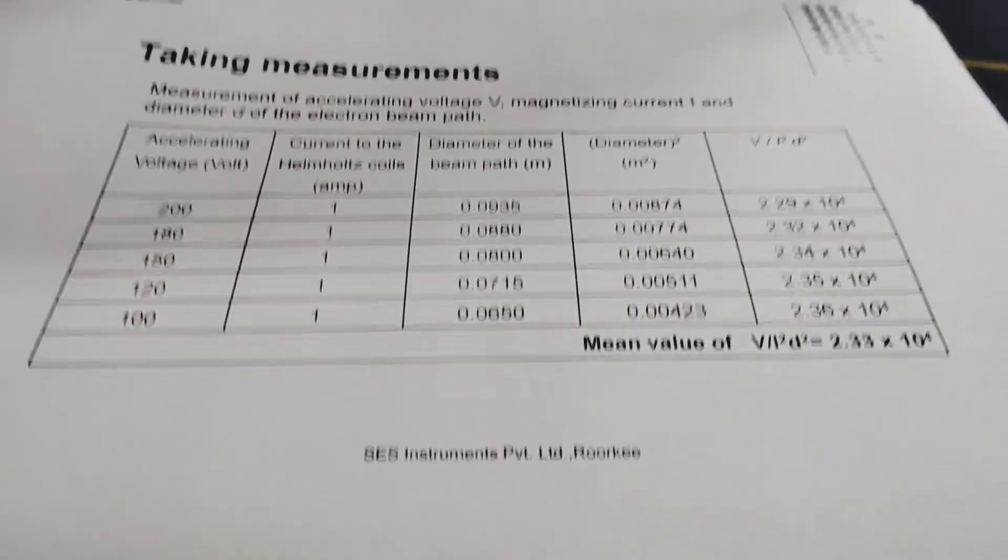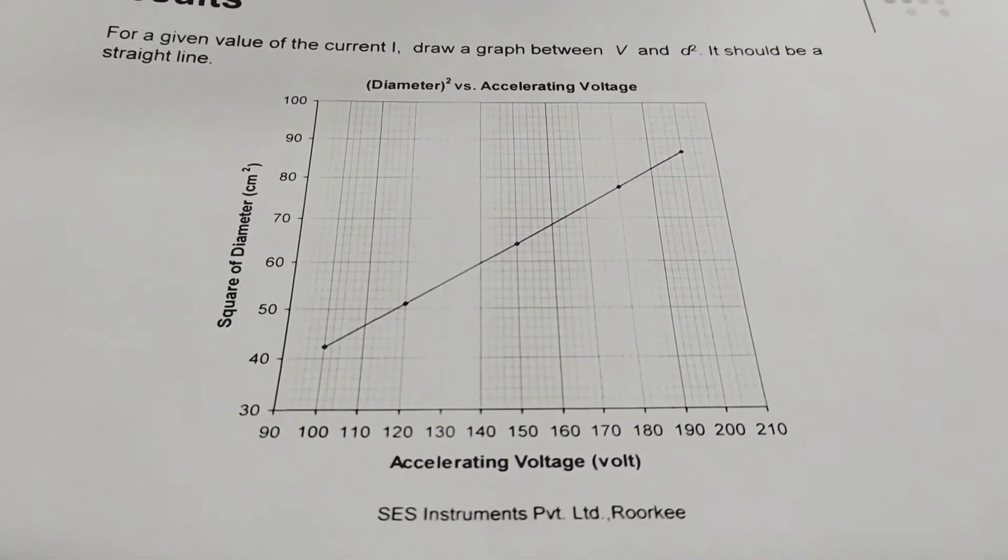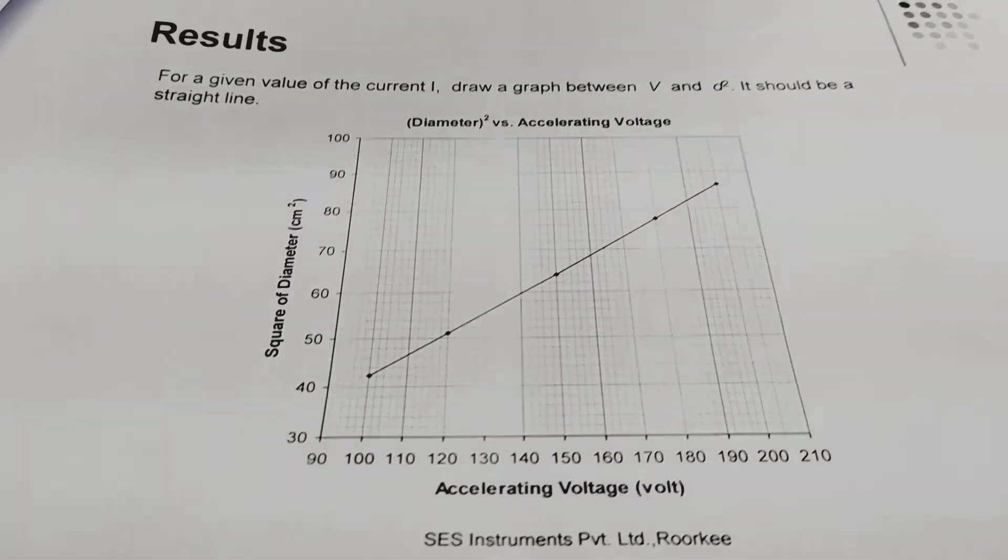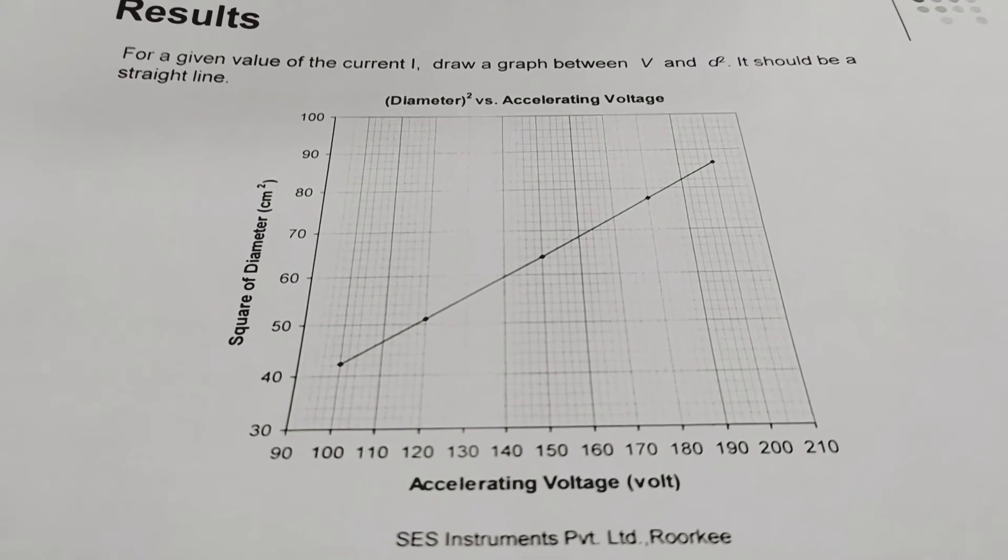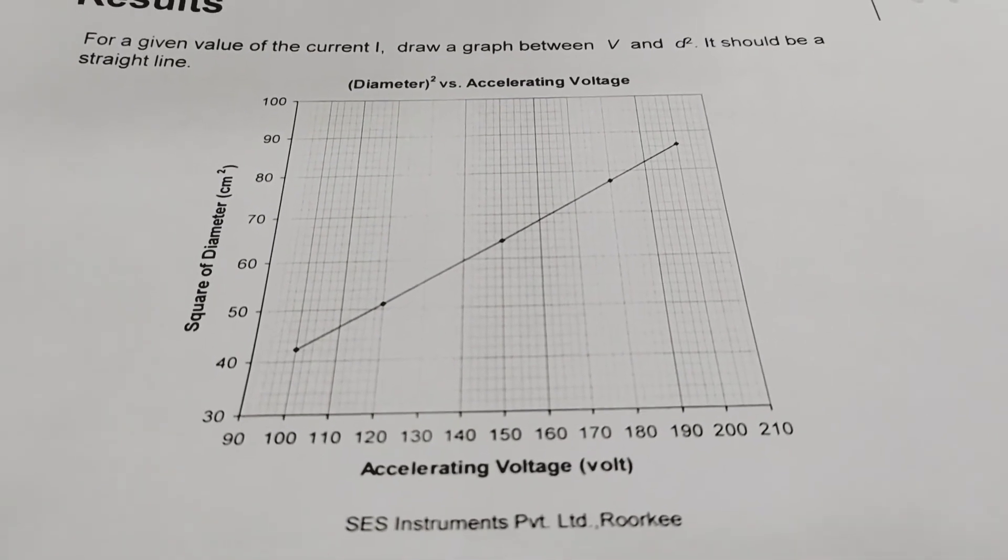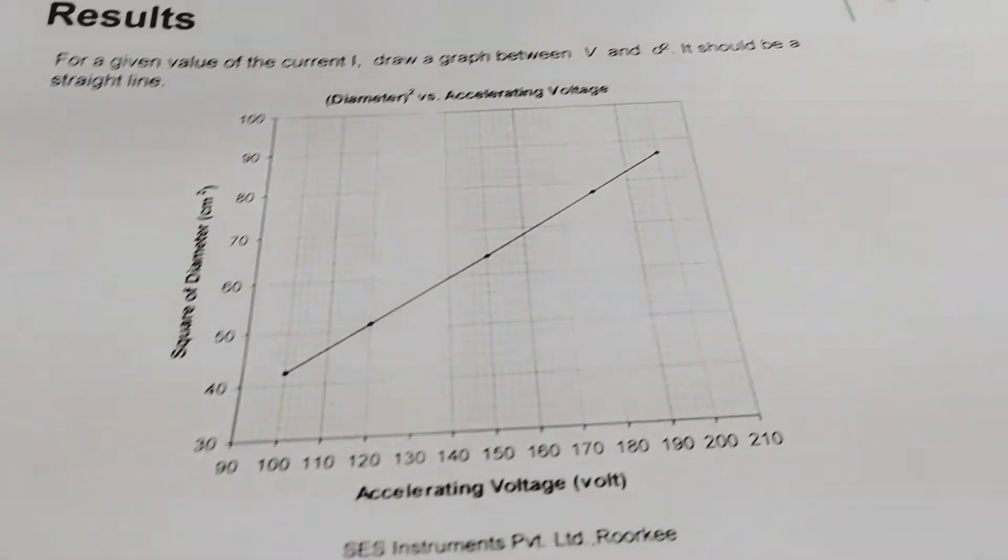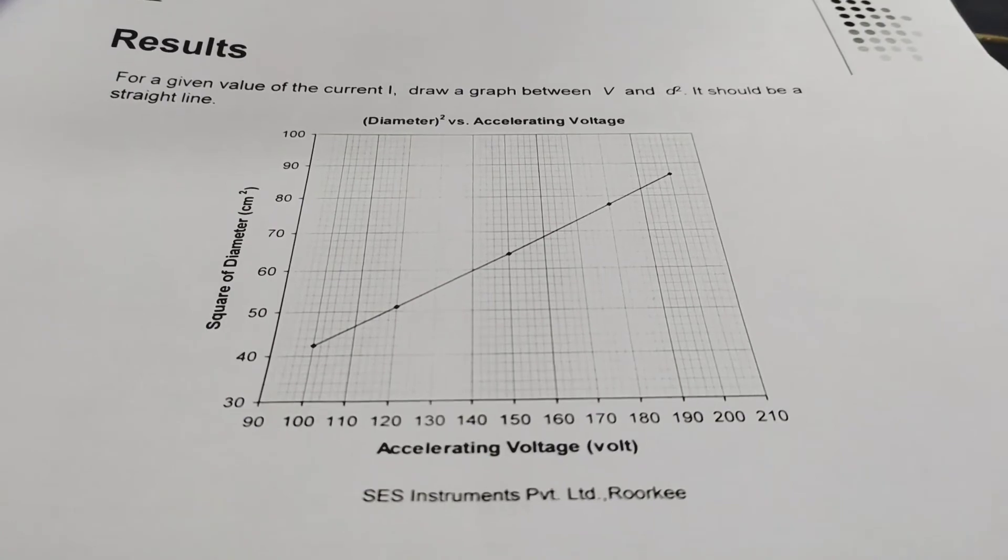Next, what we have to do, we have to plot a full scale graph. A graph will be plotted voltage along x-axis and diameter square along y-axis. And then we need to calculate the specific charge, that is e by m.